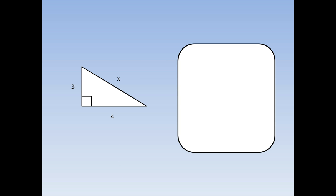For this problem, a and b are 3 and 4, and we've been asked to work out the length of the hypotenuse. First of all, we write down the formula: c squared equals a squared plus b squared. We fill in the numbers — a is equal to 3 and b is equal to 4. Remember that squaring means timesing by itself: 3 times 3 is 9, and 4 times 4 is 16. 9 and 16 add up to 25, so c squared equals 25.